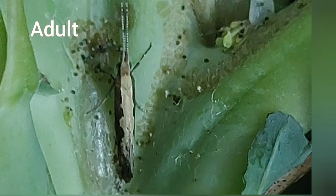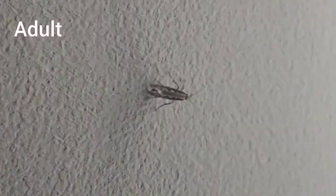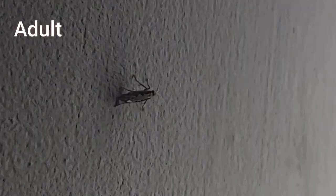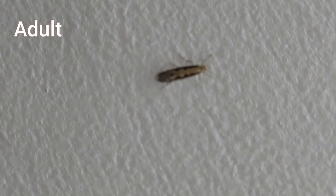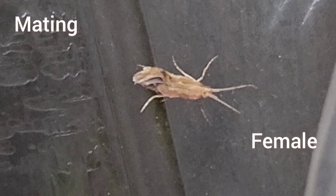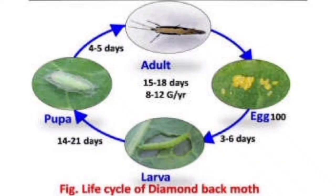Adult lifespan is about 6 to 13 days. These moths are weak fliers, active at night, and feed on flowers. The female secretes a sex hormone that attracts males; courtship and mating occur near the host plant. Males mate multiple times while females prefer to mate once in their lifetime. According to its life cycle, DBM completes 15 generations in a year.